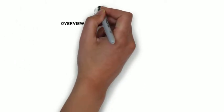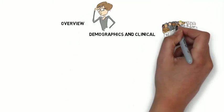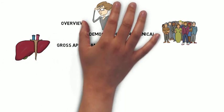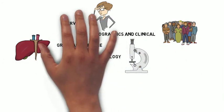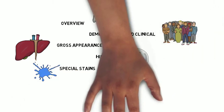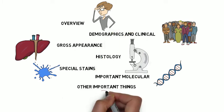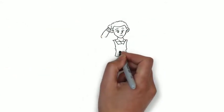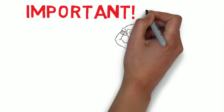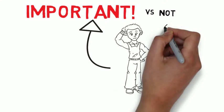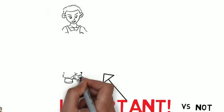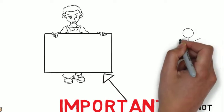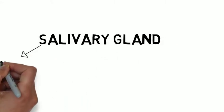Each topic will be presented in the following fashion: first an overview, then demographics and clinical, after that the gross appearance, following that histology, then special stains, molecular studies, and any other important facts. Some smaller lesions will be truncated. To distinguish important from unimportant facts, I will write the most important facts on the board and just say aloud topics of academic interest. Let's begin.